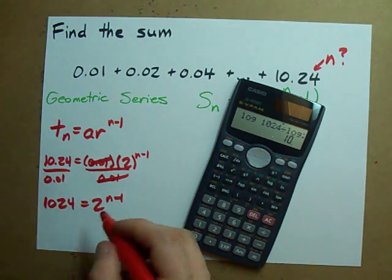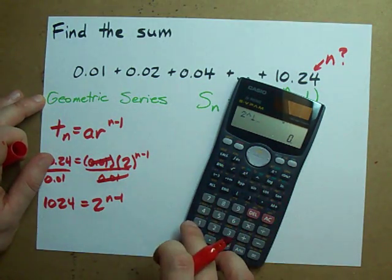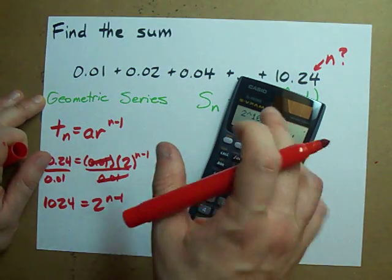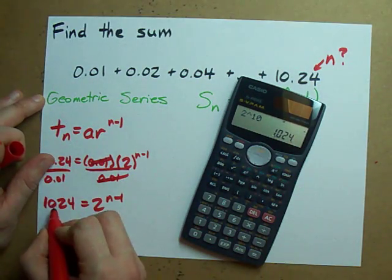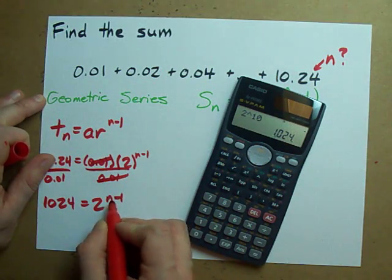I'm going to guess that the exponent is 10. Let's see. 2 to the power of 10 is 1024. So if 1024 is 2 to the power of this then this must be 10.